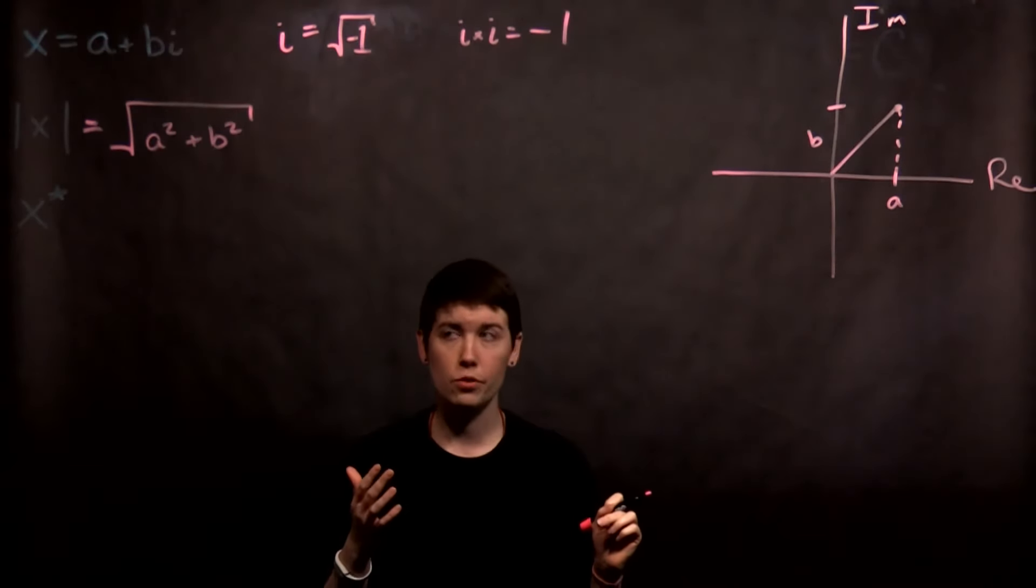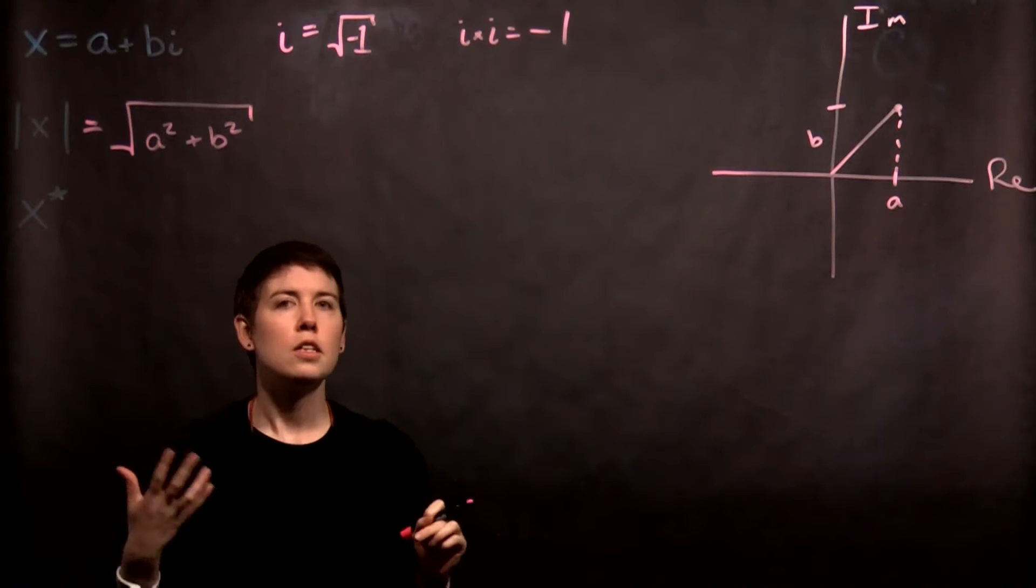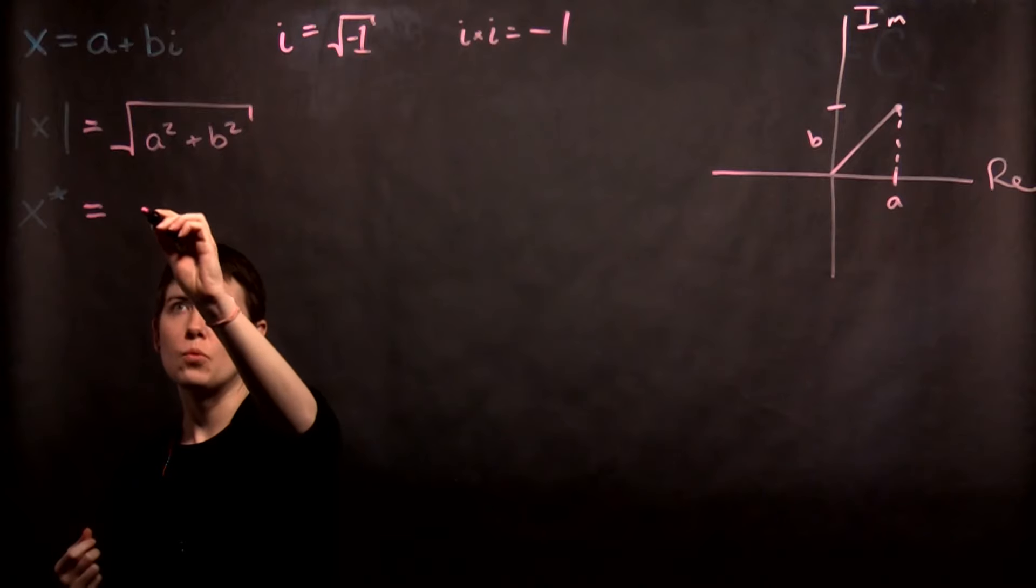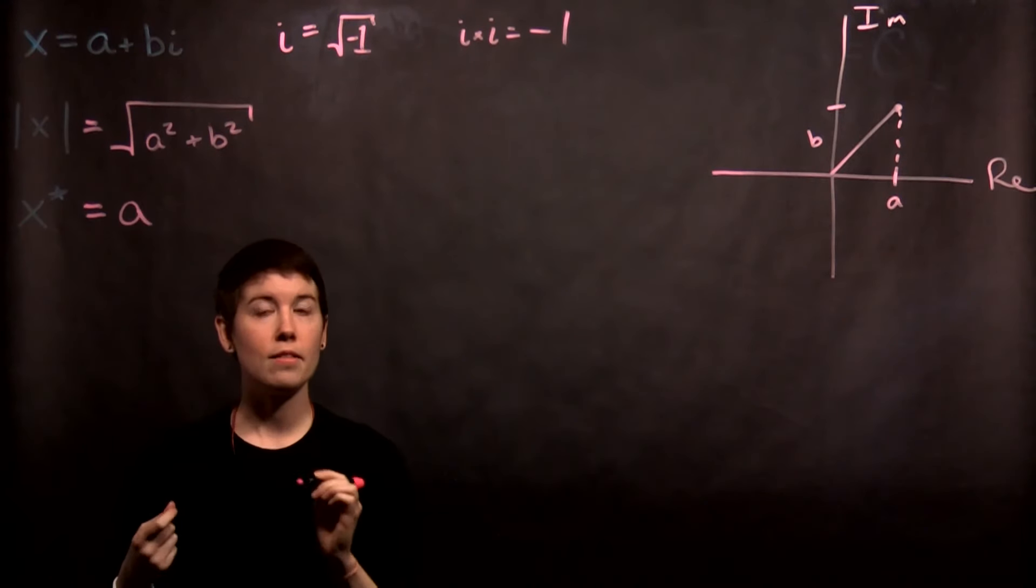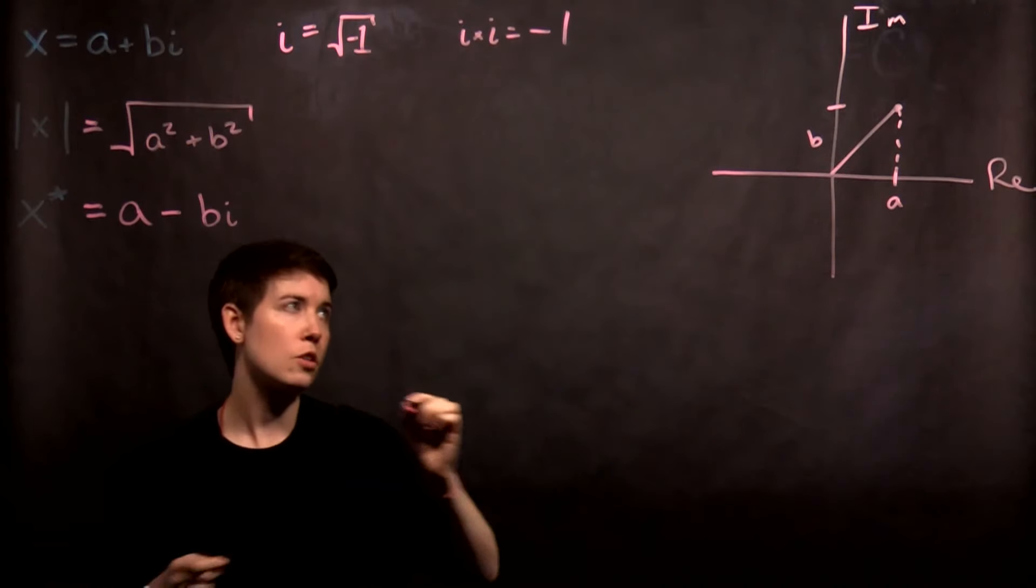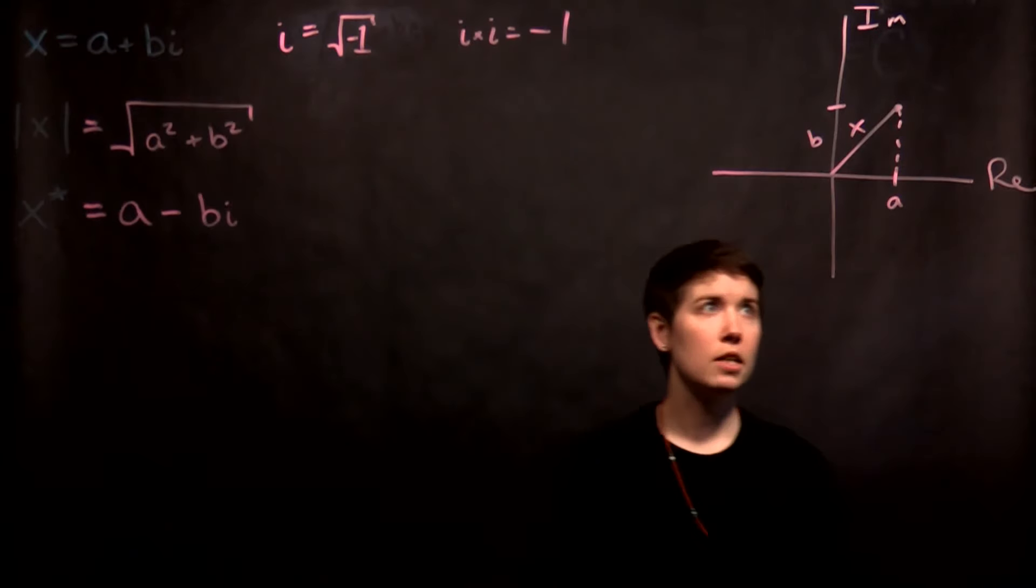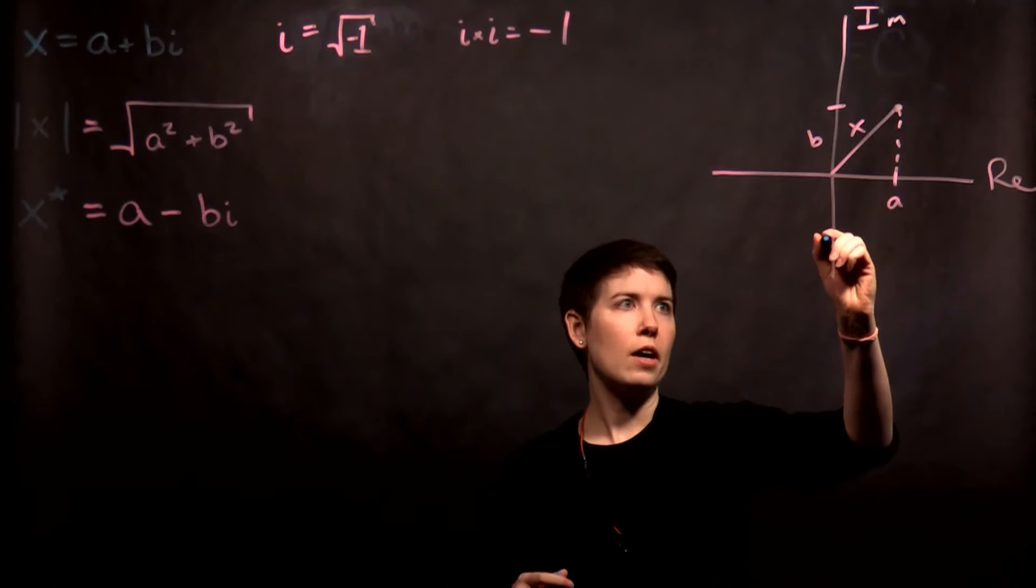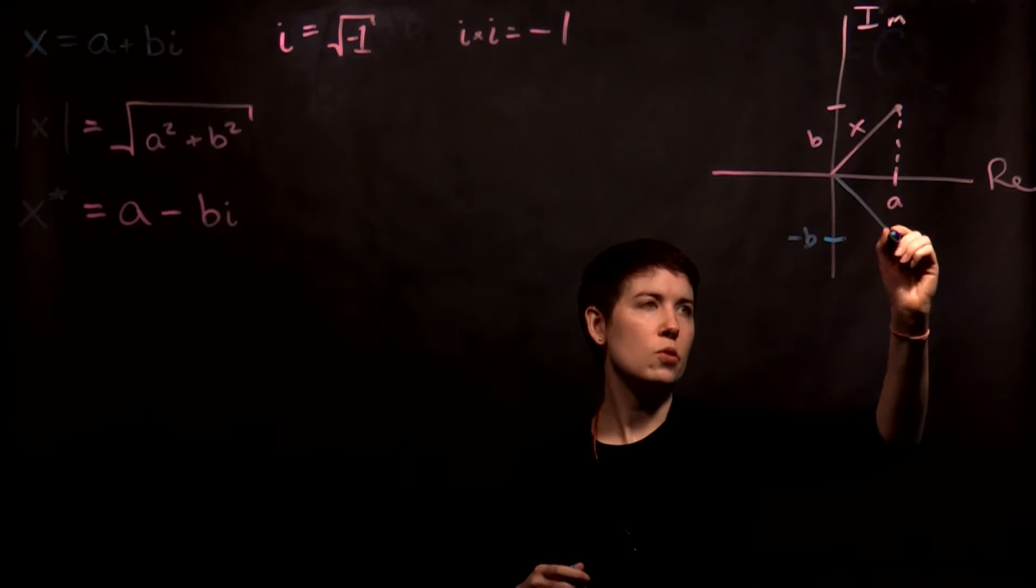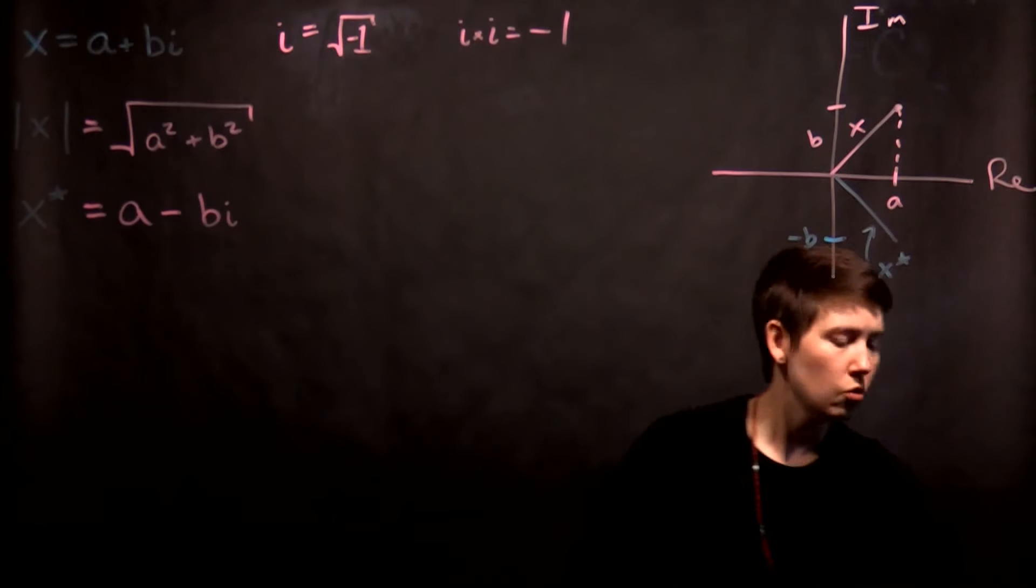There's actually a different technique we can use. This x star is the complex conjugate. What we do with that is we keep the real part the same, but then we flip the sign on the imaginary part. So if this is x, the complex conjugate is in fact going to be down here. This would be our complex conjugate.